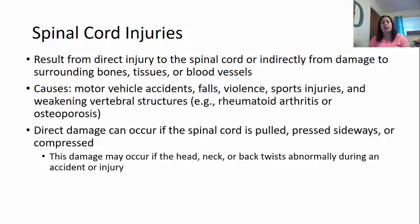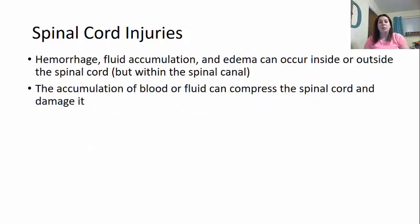Direct damage can occur if the spinal cord gets pulled, pressed sideways, or compressed. This damage may occur if the head, neck, or back gets twisted abnormally during injury. Within the spinal canal, a hemorrhage or fluid accumulation due to excessive cerebral spinal fluid or swelling through edema could occur inside or outside the spinal cord — but still within the vertebral canal. There's only so much space, so this accumulation would compress the spinal cord, potentially damaging it and it might not be reversible.